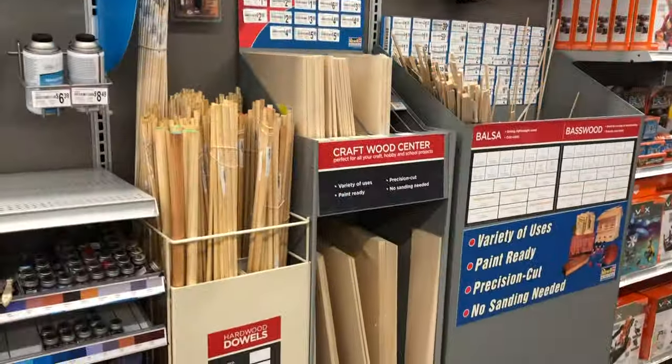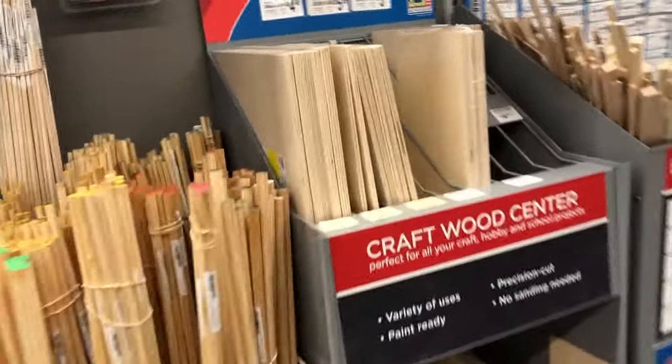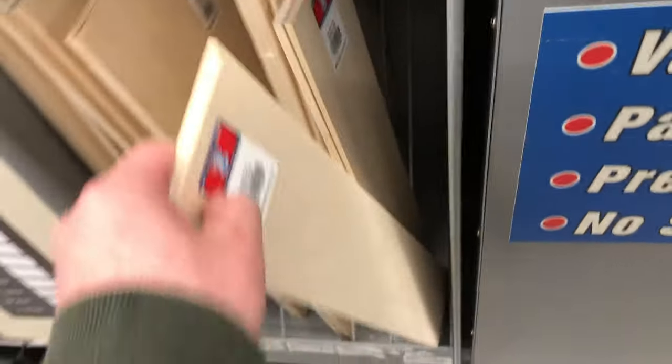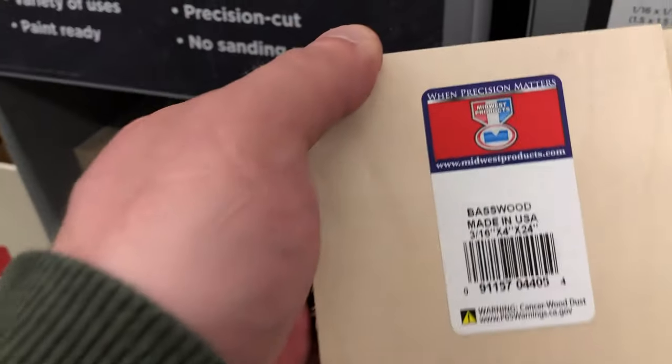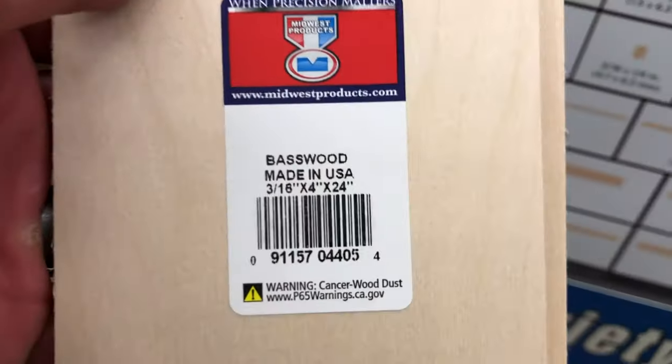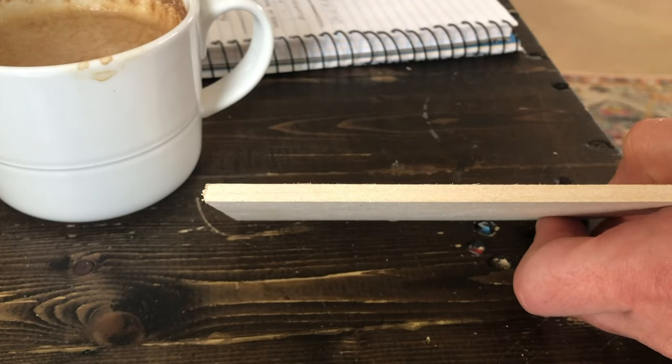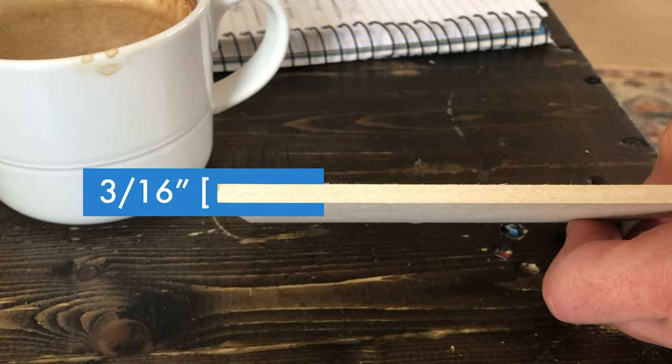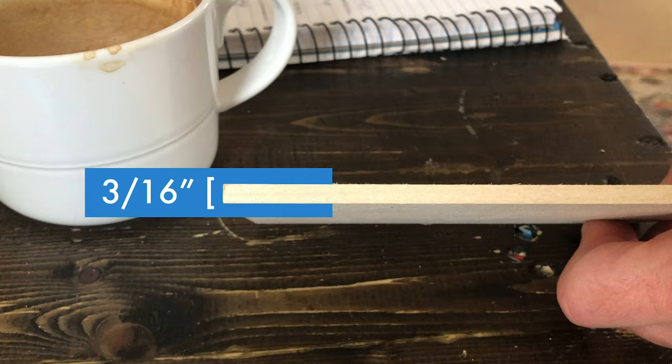The base wood planks that we'll use for this project can be found at your local craft store. These are 4 inches wide, which is the exact height that some of our pieces will be. And they're 3/16ths of an inch tall, which is important for the measurements on this layout to fit correctly.